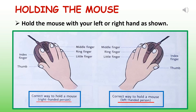Your index finger will be placed on the left mouse button and the middle finger on the right mouse button. In case you are a left-handed person, you can do the opposite — place your middle finger on the left mouse button and the index finger on the right mouse button. Once you hold the mouse correctly, you will become more comfortable as you start using it. Right-handed persons please refer to the picture on the left side of your screen, and left-handed persons refer to the picture on the right.